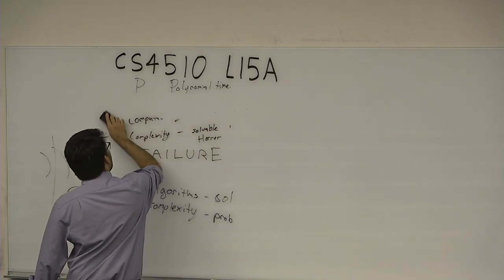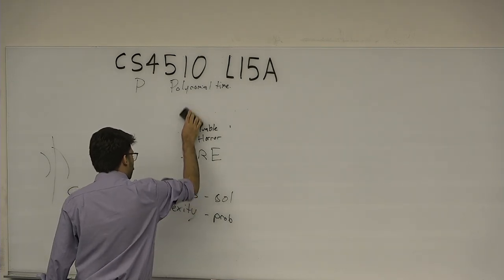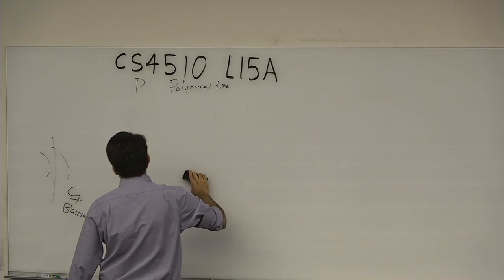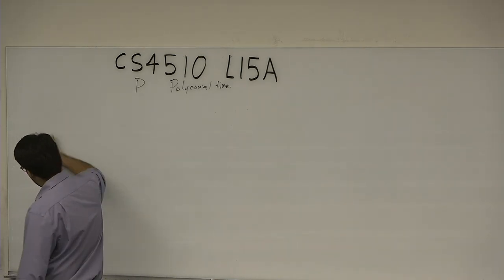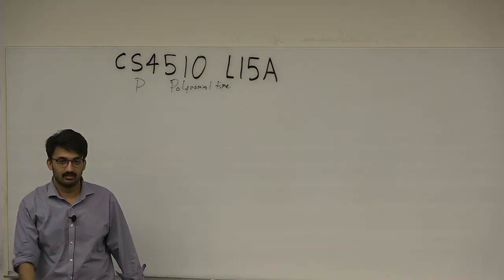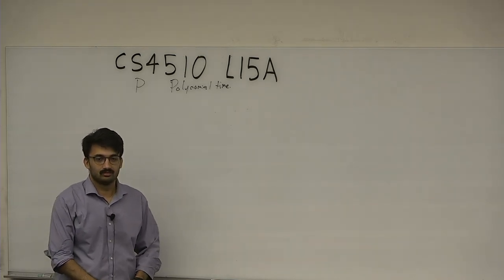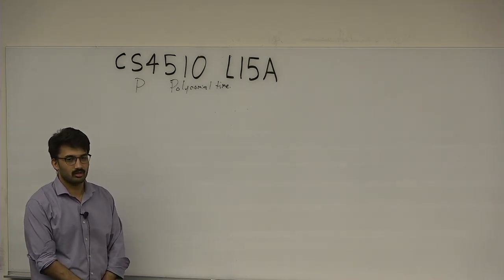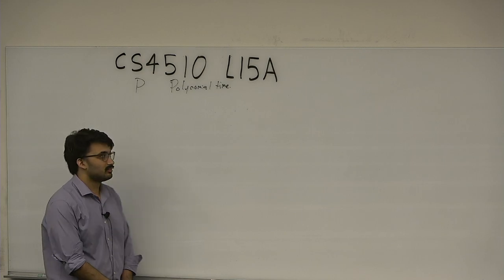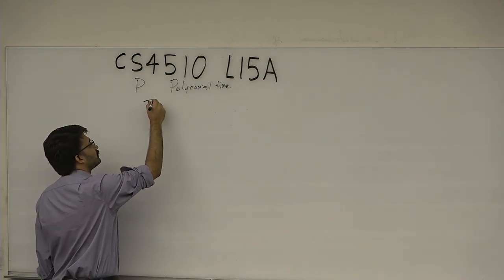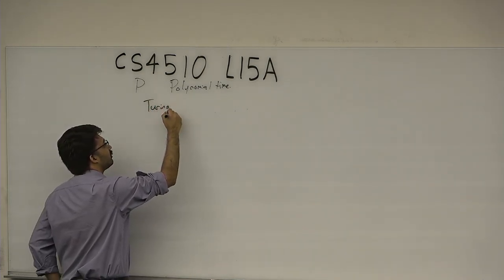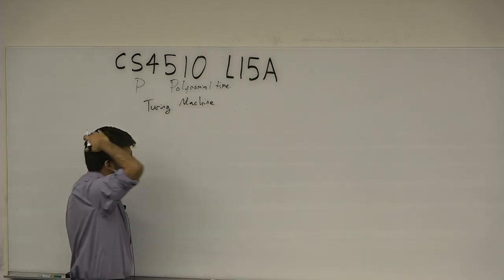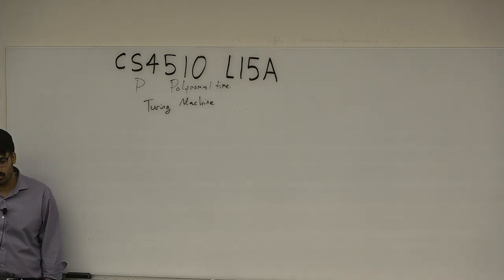So now let's do a foundational introduction. First, we need a computational model. What computational models do we know? A Turing machine. The Turing machine is the only real kind of computational model we know of. It's convenient, nice, and actually very useful for complexity.